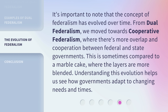It's important to note that the concept of federalism has evolved over time. From dual federalism, we move towards cooperative federalism, where there's more overlap and cooperation between federal and state governments. This is sometimes compared to a marble cake, where the layers are more blended. Understanding this evolution helps us see how governments adapt to changing needs and times.